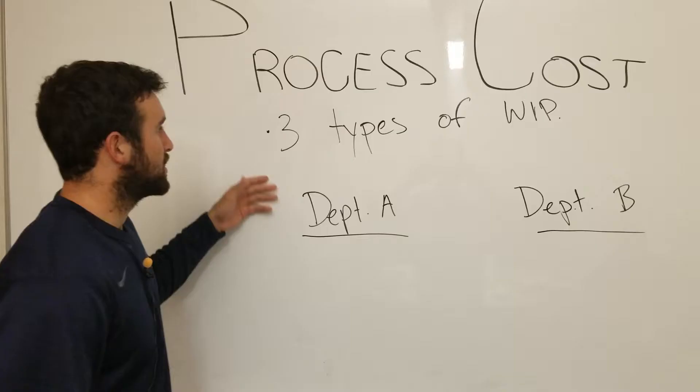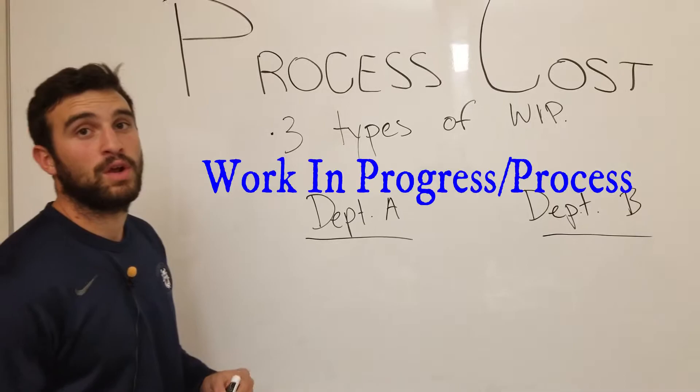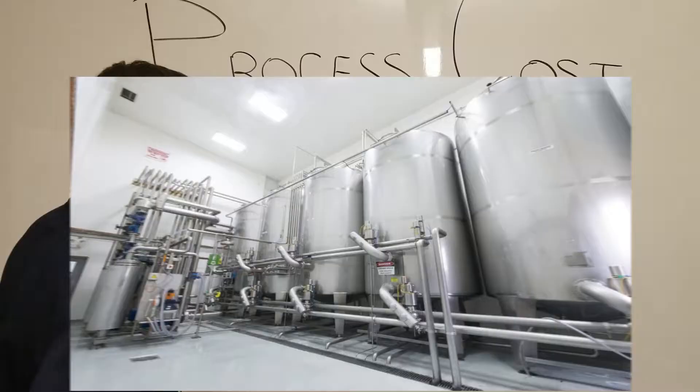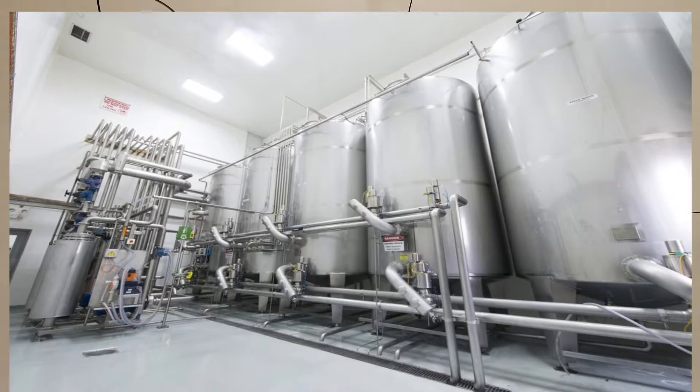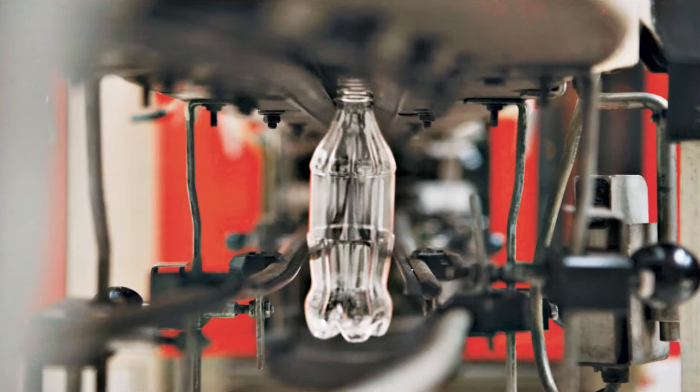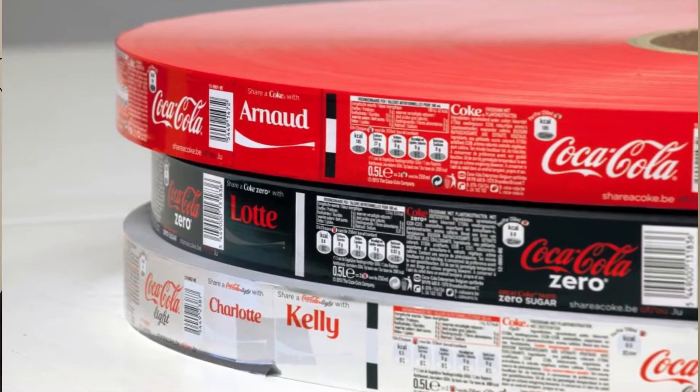So they actually have three types of WIPs — WIPs stand for work in progress. Their first work in process would be mixing and blending, the second type is bottling, and the third type is labeling and packaging. Once they finish these WIPs, then they go into the finished goods.